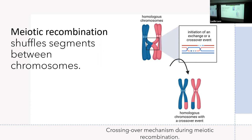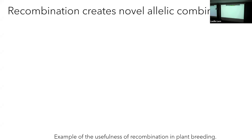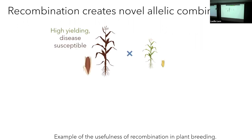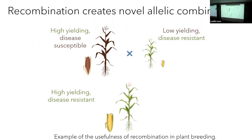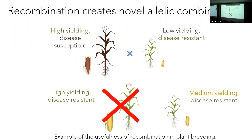Recombination is specifically important for plant breeding because it creates novel allelic combinations. A common situation: you have two lines — one is high yielding but disease susceptible, and the other is low yielding but has disease resistance. We're trying to introgress that disease resistance into the high yielding elite background. From that cross, we often want progeny that are high yielding with disease resistance. However, we oftentimes end up with medium yielding but disease resistant progeny.